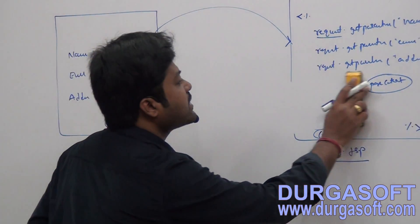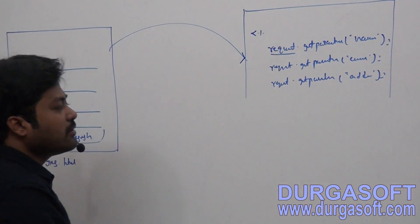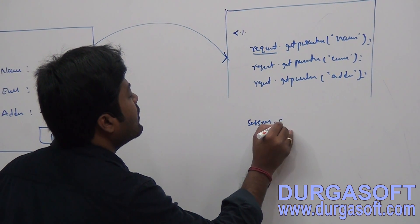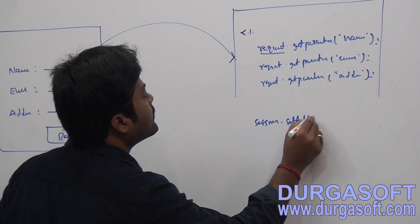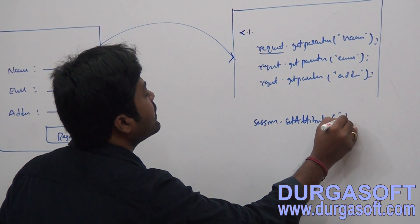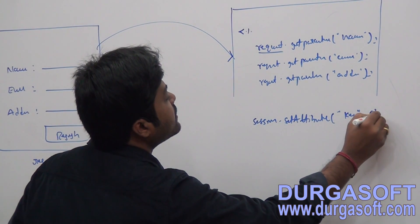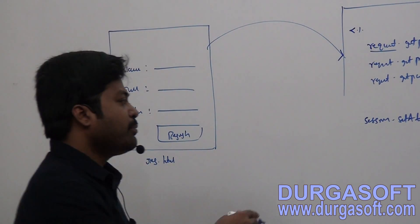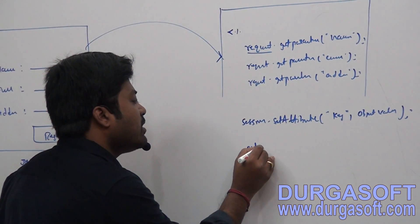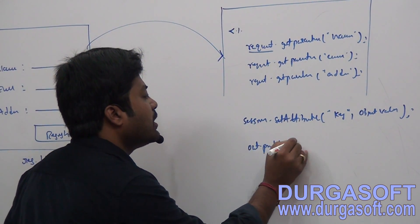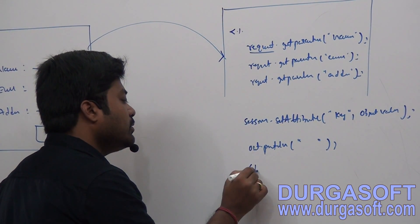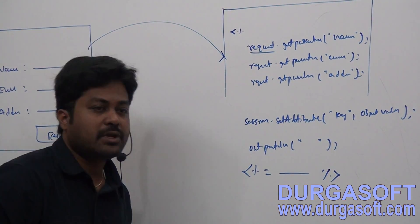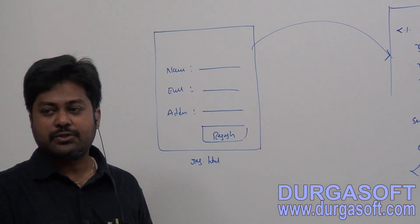To maintain sessions, simply call session.setAttribute() and provide the required key and object values. To print output there are multiple approaches: using out.println() you can write output, or using an expression tag you can also produce output.